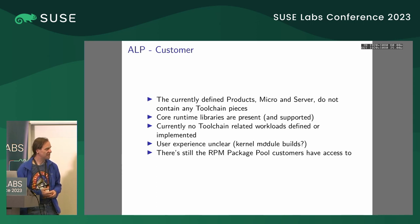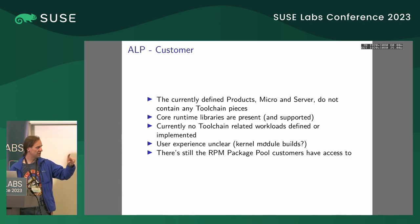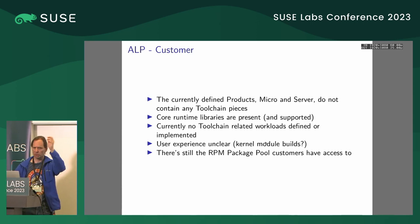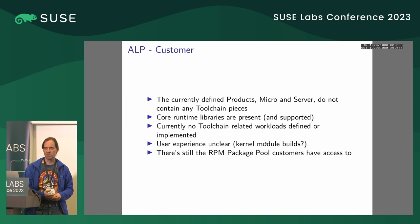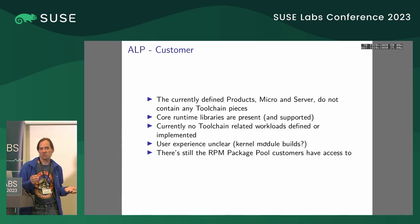When we ship micro or server, there is no way to compile something on the product. But there's still the package pool with all the RPMs, and as I understand it, it will contain basically everything that's now in the ALP source standard 1.0 — which is also changing from day to day. So customers can, with transactional install, install packages into their system and have a compiler that way, and that's possibly also supported.